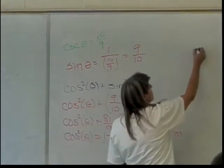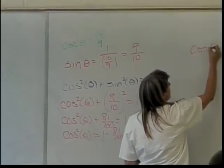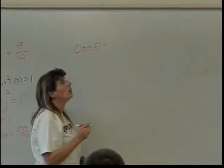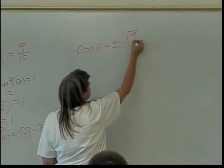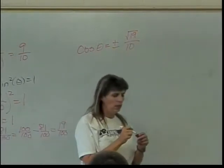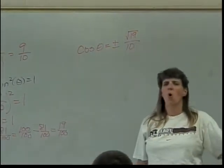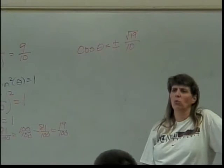Equals 19 over 100. That means cosine of theta is what? Plus or minus the square root of 19 over the square root of 100, which is 10.